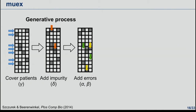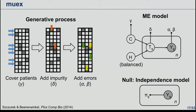We propose a generative process model illustrated in several steps. First, you choose the patients which should be covered by the mutual exclusivity pattern with some rate lambda. Then we add impurity with rate sigma, and then we have errors — false positives and false negatives. The graphical model has hidden variables: one for the coverage of patients and one for choosing which gene should be mutually exclusive in a covered patient.